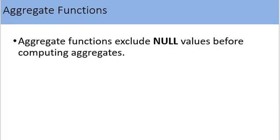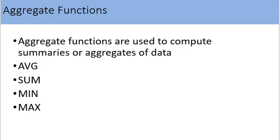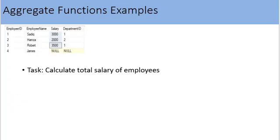One important thing to remember is that aggregate functions exclude NULL values from columns before computing aggregates. Another important thing is that AVG, SUM, MIN, and MAX functions only operate on numeric types of columns.